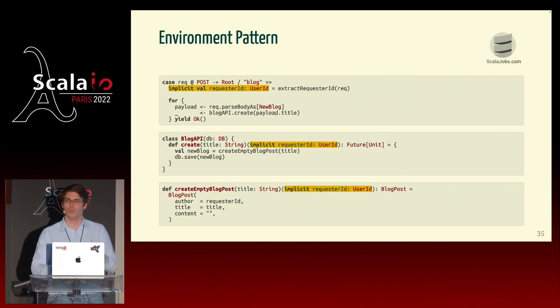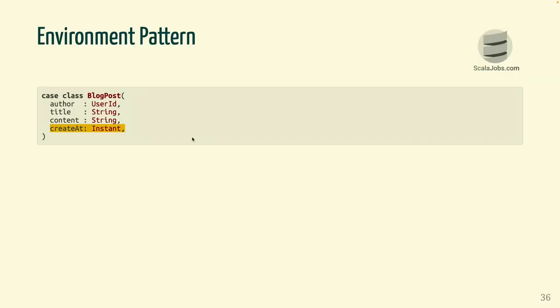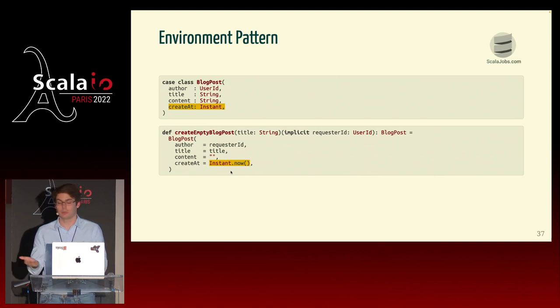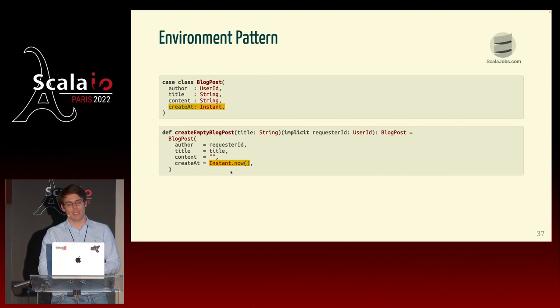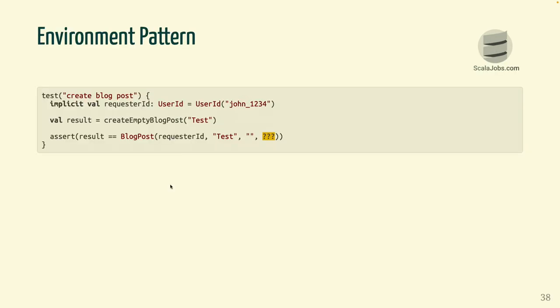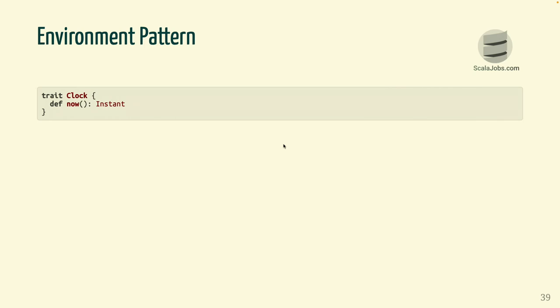Let's look at another example. Let's say we want to extend our blog post with a timestamp to know when it was created. We could call Instant.now when the method is called — simple, it works. The only issue is that it makes it non-deterministic: every time you call it you get a new instant, which means when you want to write unit tests about your method, you will never know which value will be generated. A better approach is to inject the time, the clock, manually to our function.